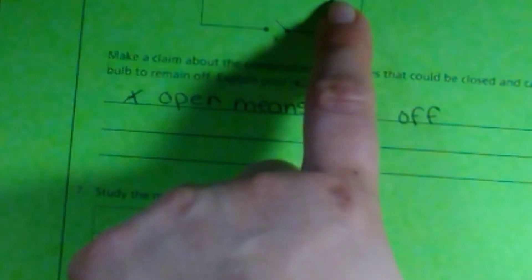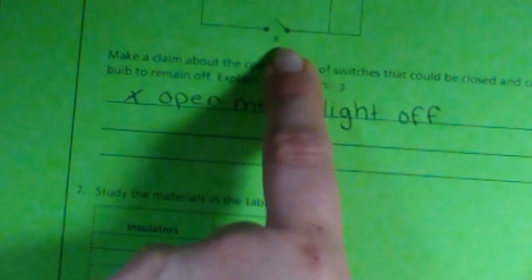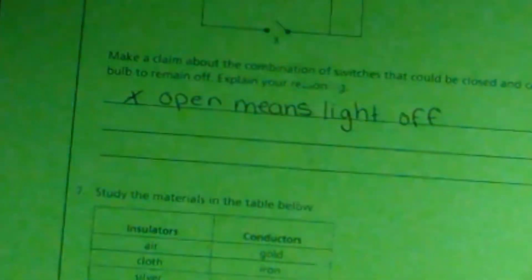So I can have Y closed and Z open. I can have Z open and Y, or Z closed and Y open. I can have both of them closed and X. If X is open, it will stop the flow of electricity.